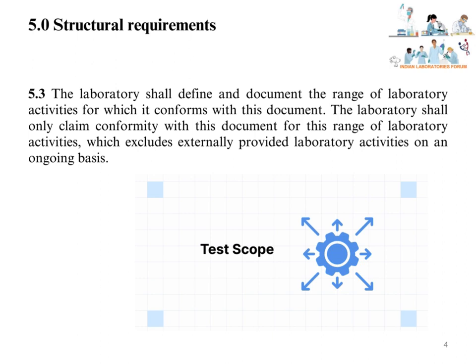Upon receipt of accreditation only, the lab should claim conformity to ISO IEC 17025 standard with respect to the accredited scope of testing or calibration. A laboratory cannot claim conformity to ISO IEC 17025:2017 standard for externally provided laboratory activities, such as subcontracting activities.